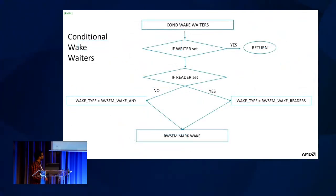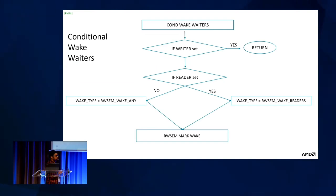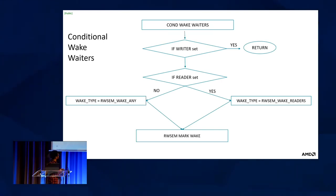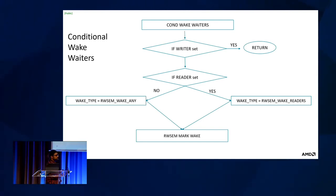The conditional wake waiter function: while holding the wait lock, it checks if the writer bit is set — if so, no other threads can be woken. If the reader bit is set and there are readers in the queue, it can wake up those readers. If the reader bit is not set, meaning this is not the current owner, it wakes any thread — either a writer or a set of readers — using the mark_wake function, which goes through the current waiters in the queue and wakes them depending on their type.